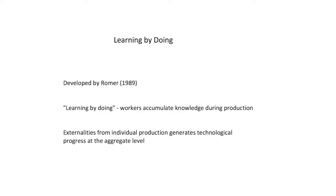In this video we're going to be looking at deriving the AK model, and this comes about when we start to think about learning by doing in our long-run economic growth models. Learning by doing was developed by Romer 1989, and the idea is that workers accumulate knowledge and improve their skills during production of a good. This means we have externalities from production from individual firms, which will generate technological progress at the aggregate level.